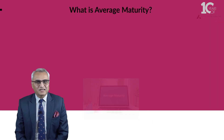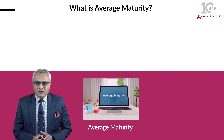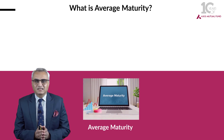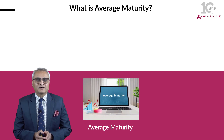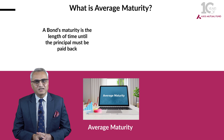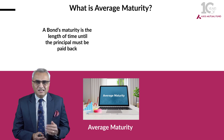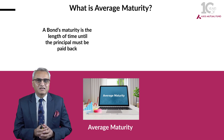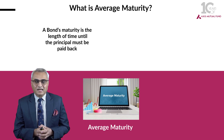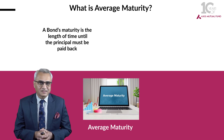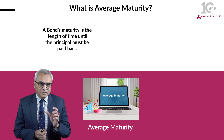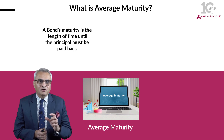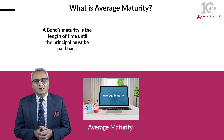What is average maturity? All debt securities are issued with a fixed tenor of 1 year, 3 years, 5 years, or 10 years. This is the period by which investors must receive their money back as far as the principal is concerned, and that becomes the maturity of one particular security issued by a borrower.